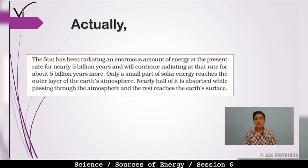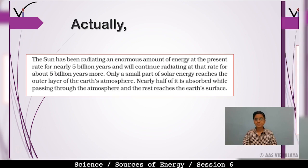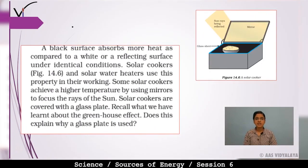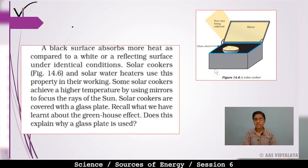Now let's look at the solar cooker. A black surface absorbs more heat as compared to a white or a reflecting surface under identical conditions.